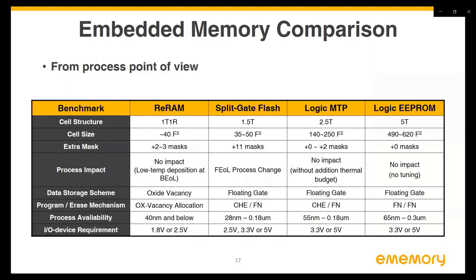The following two pages show the embedded memory comparison, including RRAM, split-gate flash, and two inline floating-gate type memories. From a process point of view, the RRAM cell structure is simpler compared to the other three memory cells, and there are only two to three extra masks for integration in the back-end process, which is good for process porting. Regarding the front-end process, floating-gate type memories need a gate oxide thick enough to ensure layer retention, such as a 3.3V or 5V I/O device, which is typically not available in 40 nanometer processes and beyond. But this doesn't affect RRAM technology, which only needs a 2.5V or even 1.8V I/O device. Therefore, RRAM technology is more scalable as the process scales down.